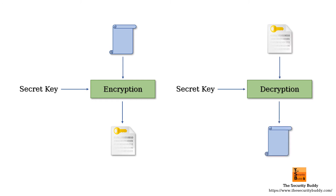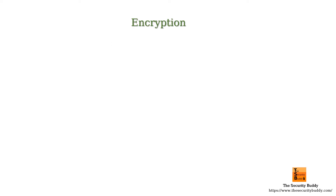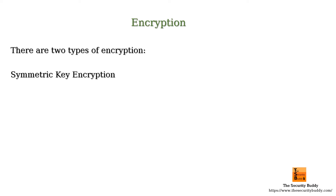Decryption is the reverse process. In decryption, the cipher text message is converted back to plain text with the help of a secret key. There are two types of encryption: symmetric key encryption, and public key encryption or asymmetric encryption.